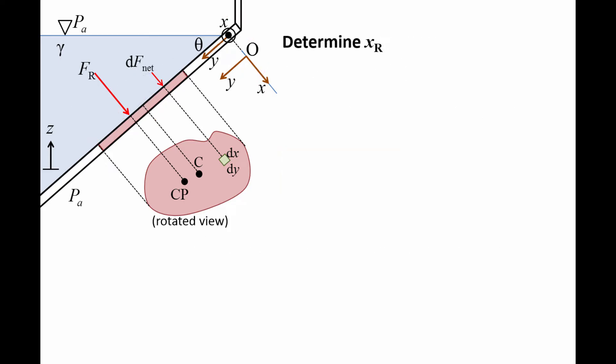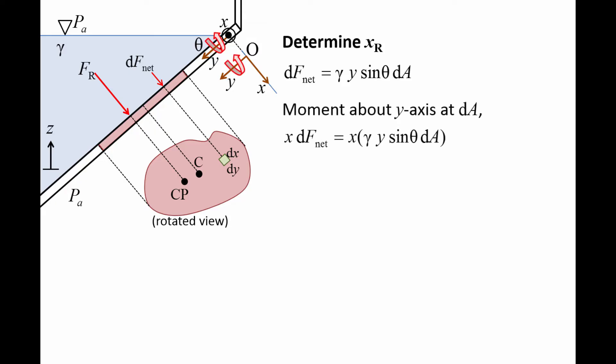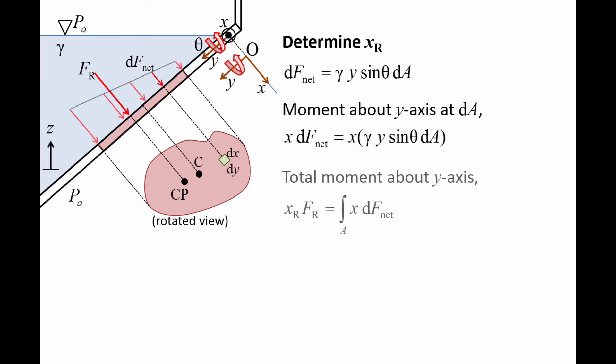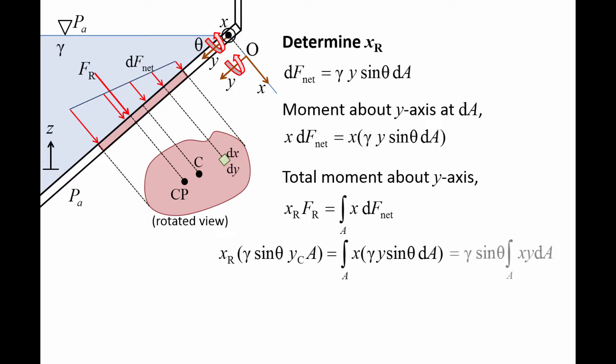We can follow a similar procedure to find the x-coordinate of the center of pressure, XR. The equation for the net force exerted on area DA is the same: gamma times Y sin theta DA. But now we want to know the moment produced by DF net about the Y-axis. The moment arm for DF net is X, and the moment produced by DF net is X times DF net. We can find the total moment about the Y-axis by integrating X DF net over the entire wall. XR is the moment arm needed for the resultant force FR to produce the same moment about the Y-axis as the entire pressure field. The integral of X Y DA is the product moment of area with respect to the X and Y axes, denoted by IXYO.